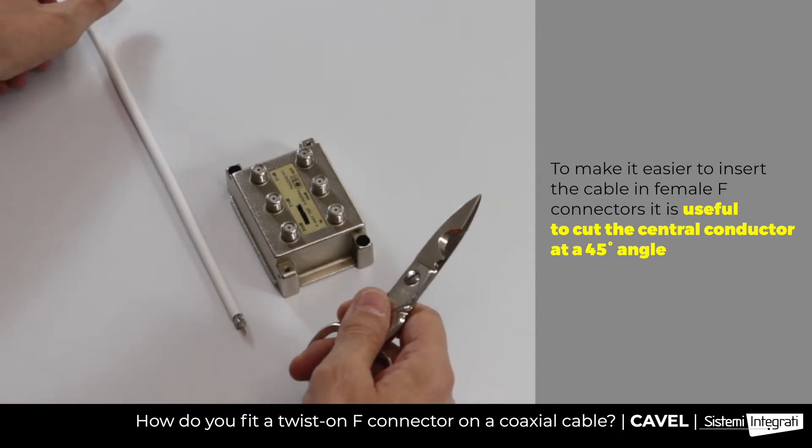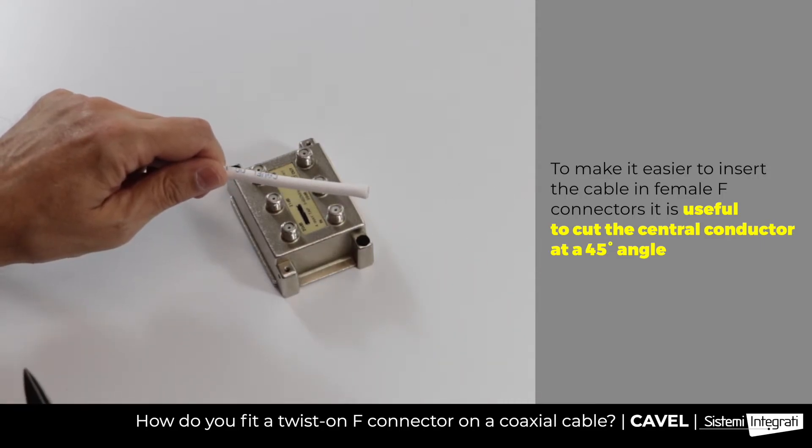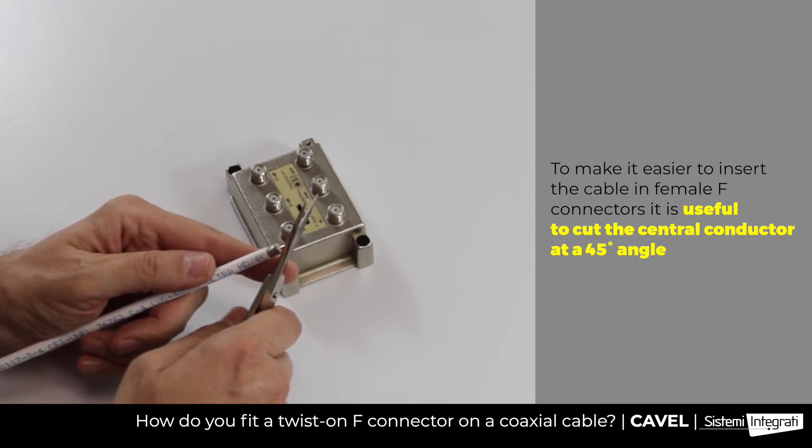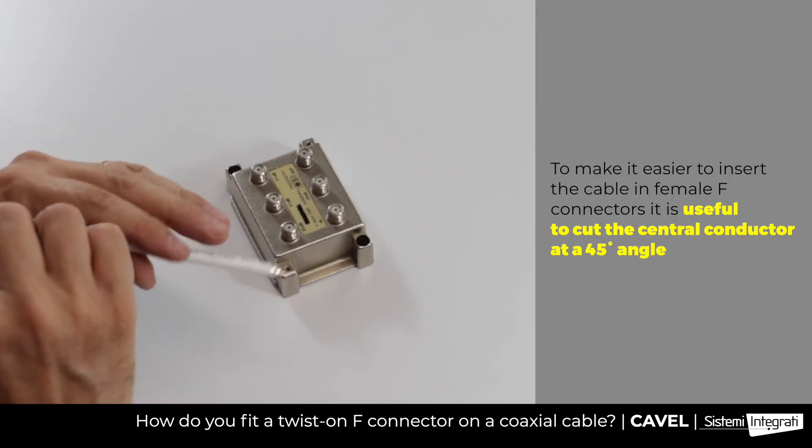Cavel scissors can be used both to cut the Cavel cable and to cut the internal conductor of the coaxial cable at a 45 degree angle, duck-bill cut, to make it easier to insert it into the female F-connectors.